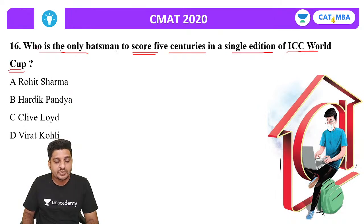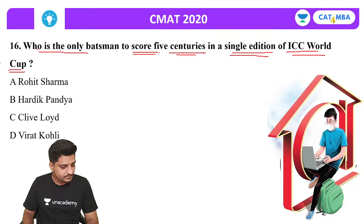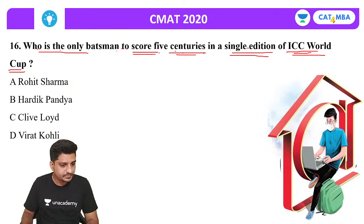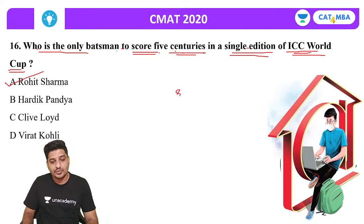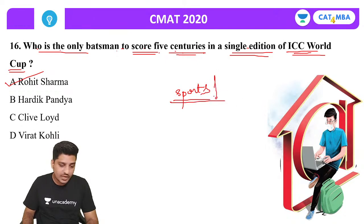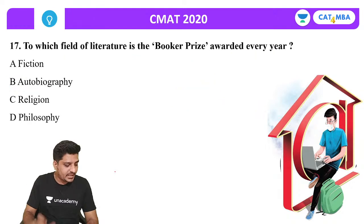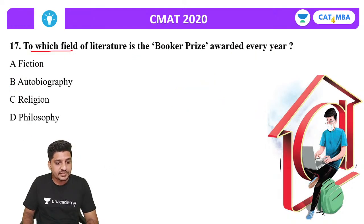Next question: Who is the only batsman to score five centuries in a single edition of the ICC World Cup? The correct answer is Rohit Sharma. This is a sports section question.